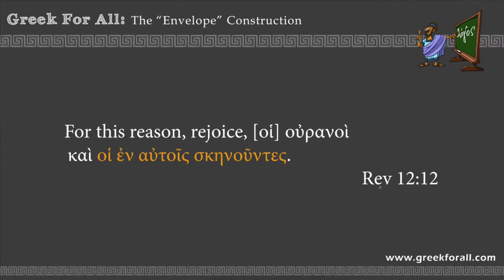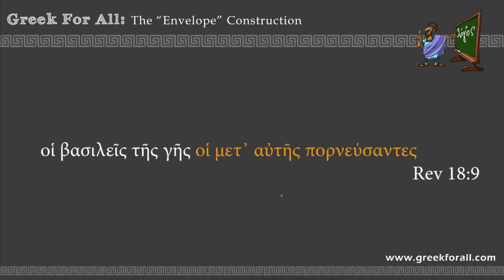Another example from Revelation 12:12: 'For this reason rejoice, hoi ouranoi, kai hoi en autois skēnountes.' We translate: 'rejoice' — 'hoi ouranoi' is vocative plural, meaning 'the heavens.' Then 'kai' means 'and.' We have another envelope construction: the article 'hoi,' then the prepositional phrase 'en autois' meaning 'in them' (i.e., in the heavens), and then the participle 'skēnountes' from 'skēnoō,' meaning 'I dwell.' So: 'Rejoice, the heavens, and those who dwell in them.'